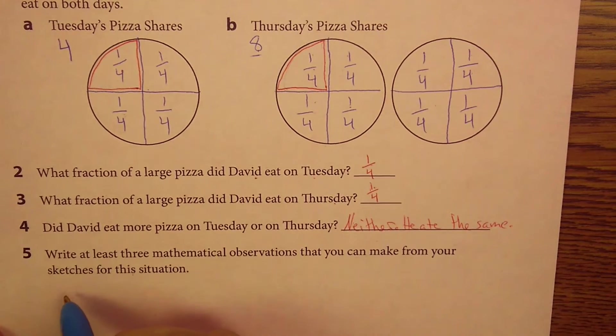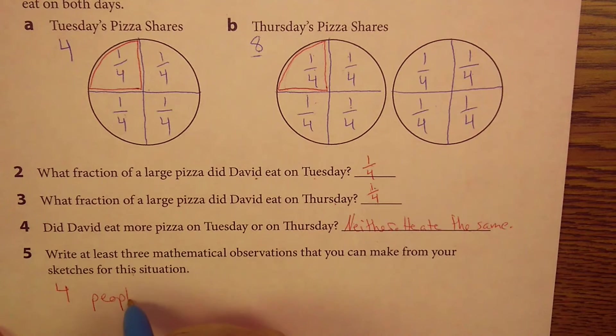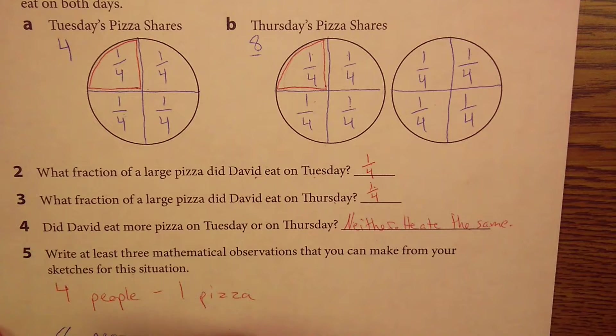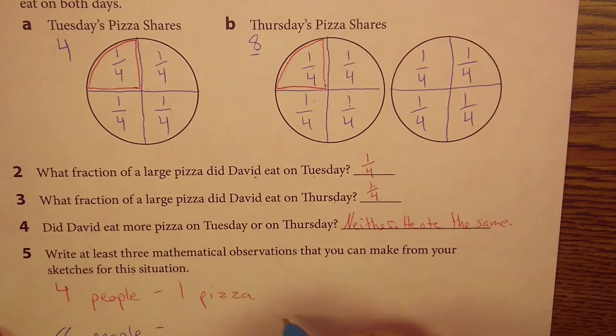And then three mathematical observations that you can make from the sketches for this situation. Well, here's one observation. Four people, one pizza. That was one day. I'm going to do this in a different color. On the other day, there were eight people. And there were two pizzas.